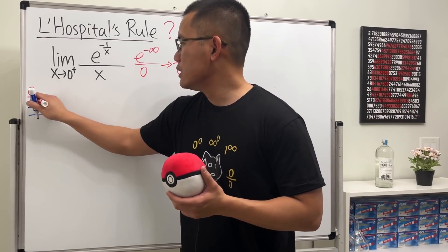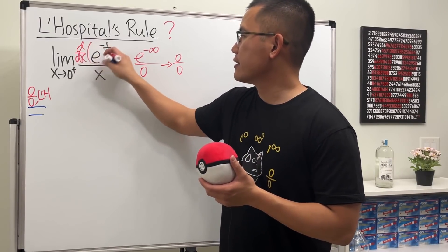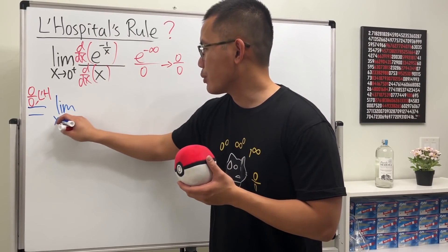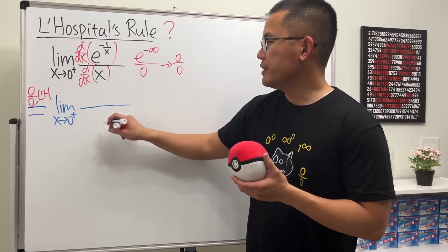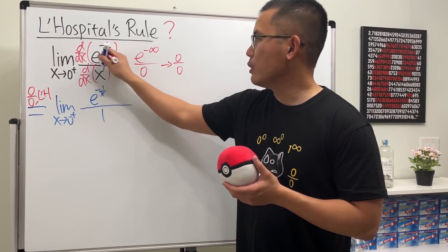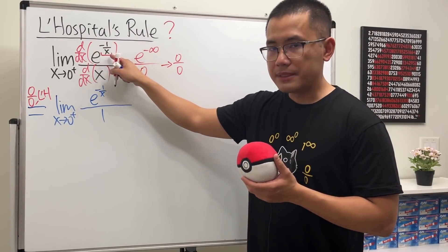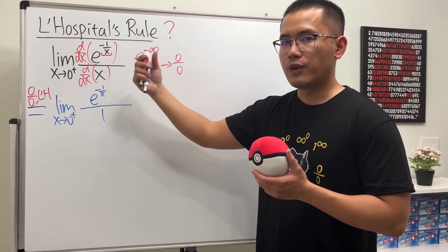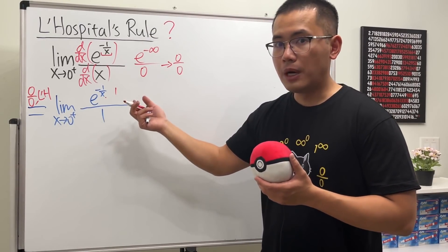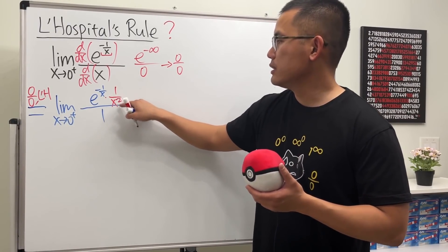Because it is 0 over 0, let's try L'Hôpital's rule — differentiate the top and then differentiate the bottom, keeping the limit as x approaching 0 plus. The derivative of the bottom is easy, just 1. The derivative of e to the negative 1 over x is e to the same thing multiplied by the derivative of the inner function. That inner function is negative times x to the negative 1, giving us positive 1 over x squared. So I'll write it as 1 over x squared.